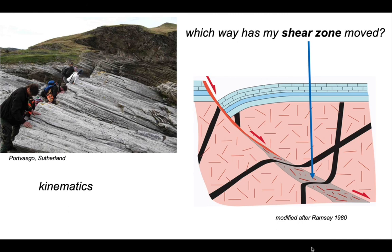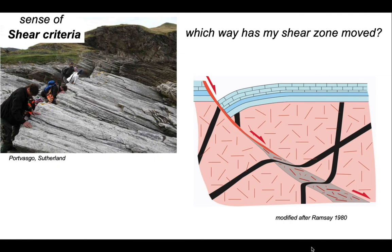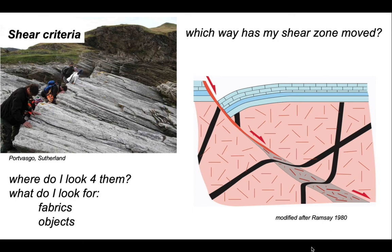Just like a fault, if we can match markers across the shear zone we can establish the movement direction. In the case of the shear zone on our cartoon, we could match those black intrusions across the shear zone and establish that it too has moved as a normal shear. But what happens if we can't recognize these offsets? That's what we're going to look at here — we're going to use objects classified as shear sense criteria to determine whether we're dealing with a thrust sense or a normal sense shear zone. The first thing to think about is where we look for these structures, and then what we're going to look for — two types of feature: fabrics and objects.